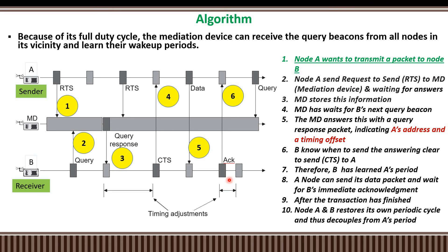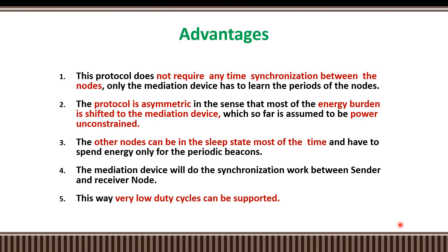After all data is transferred, the synchronization between A and B is broken. Node A and Node B restore their own individual periodic sleep-wake cycle and decouple from each other's period, returning to their natural periodic schedules.